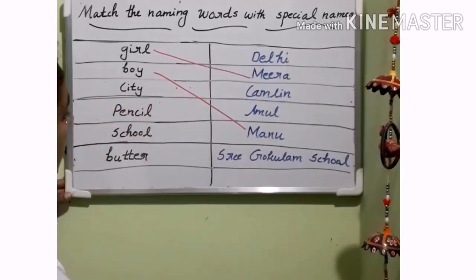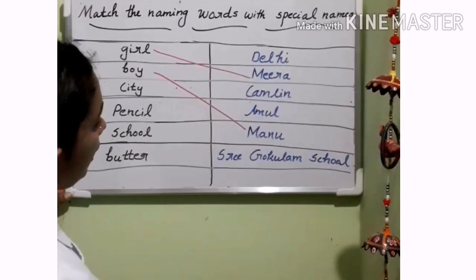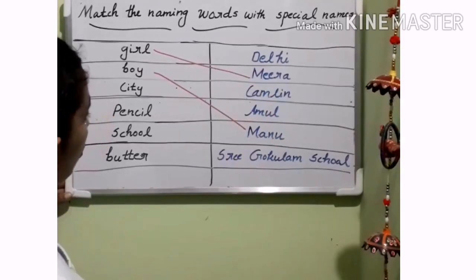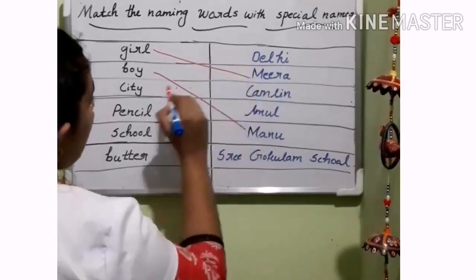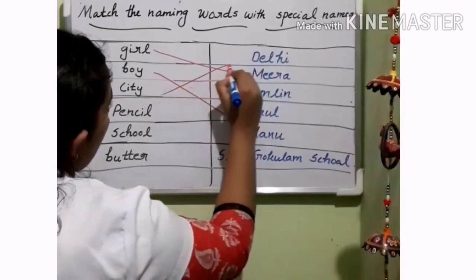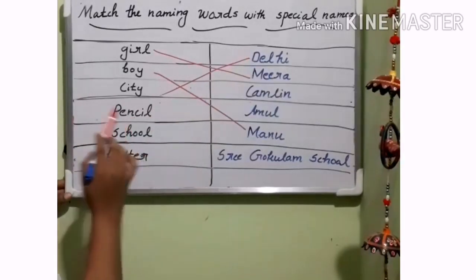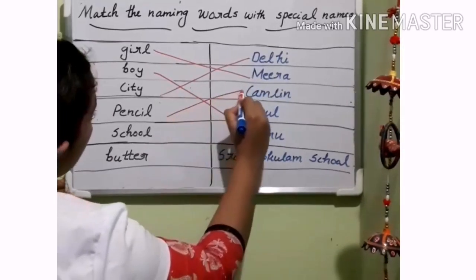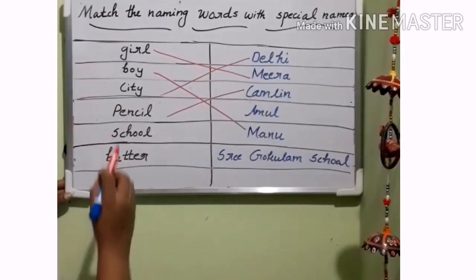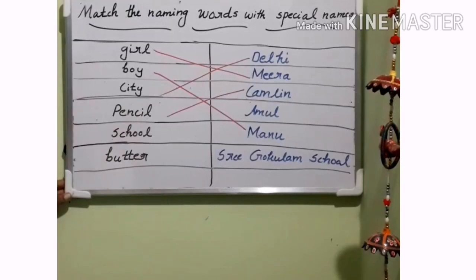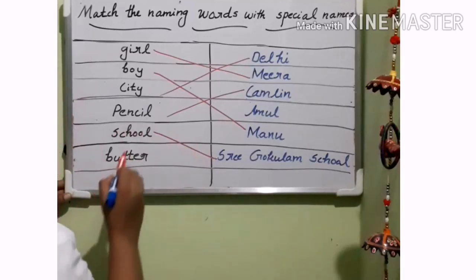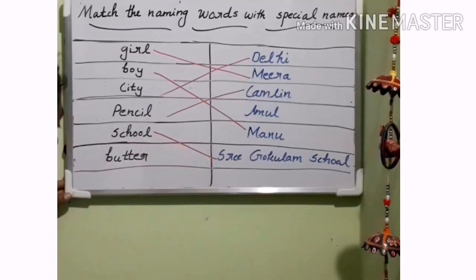And the third one is city. Which is the special name of city here? Yes, very good — that is Jalhi. So we can draw the line here. And the next is pencil. What is the special name of pencil? Yes — Camlin. So we can draw the line here. Then school — which is the special name of school? Very good — Sri Gokulam School. So, school's special name is Sri Gokulam School.